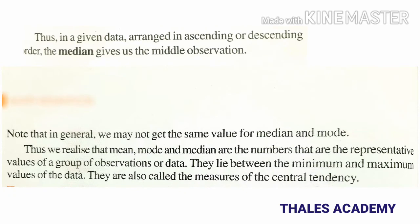Thus, in a given data arranged in ascending or descending order, the median gives us the middle observation. In general, we may not get the same value for median and mode. Mean, mode, and median are numbers that are the representative values of a group of observations or data. They lie between the minimum and maximum values of the data and are also called the measures of central tendency.